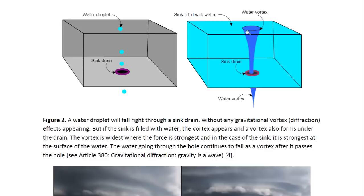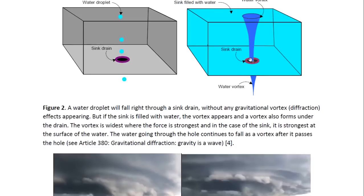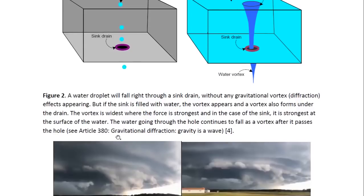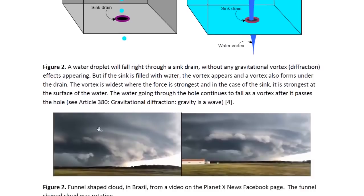The vortex forms on both sides of the hole. There's a vortex going in and there's a vortex going out. These funnels are the vortex coming out. You may look at article 380 entitled Gravitational Diffraction. What we have here is a vortex like the vortex on the bottom side of the hole, and it's being pulled down towards the surface of the Earth by the Earth's gravity, but it's being pulled down from an object that is a source of gravitational field — so it's an actual object.